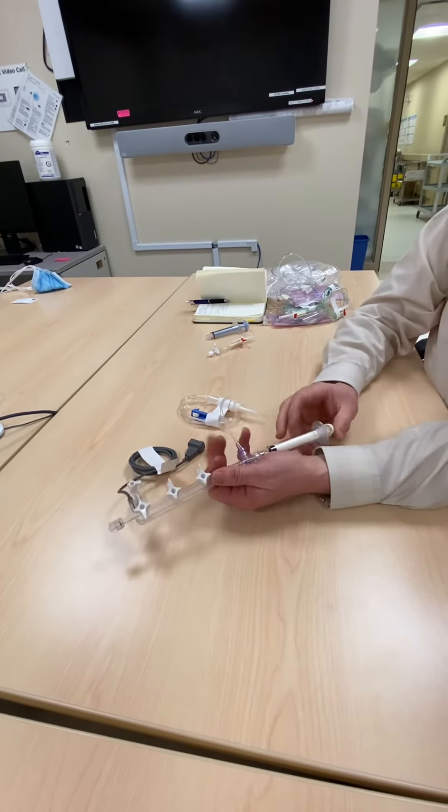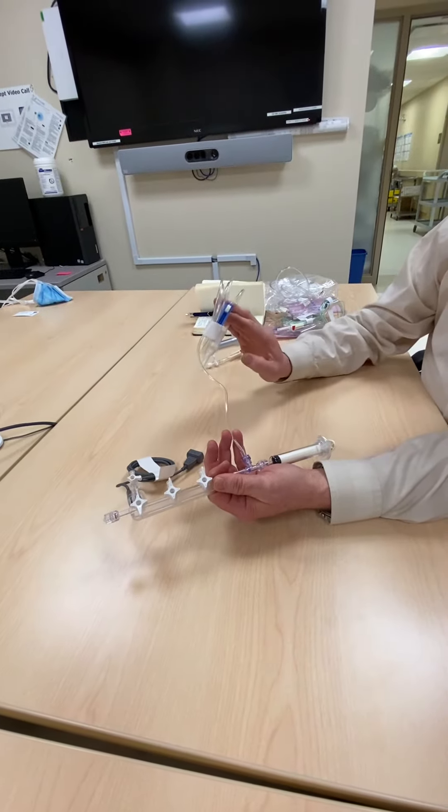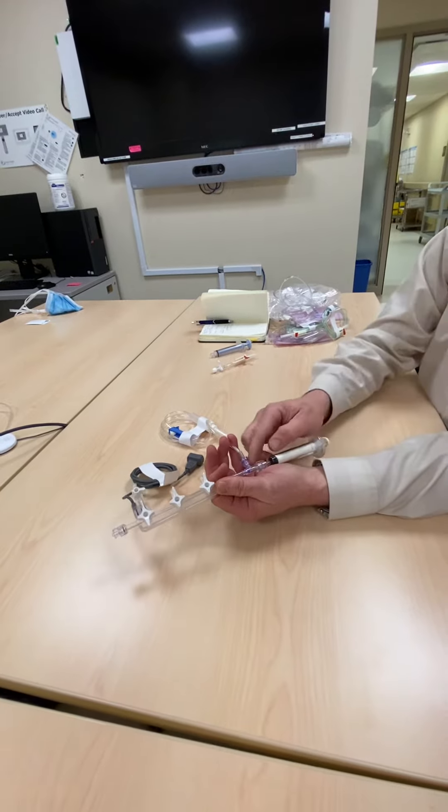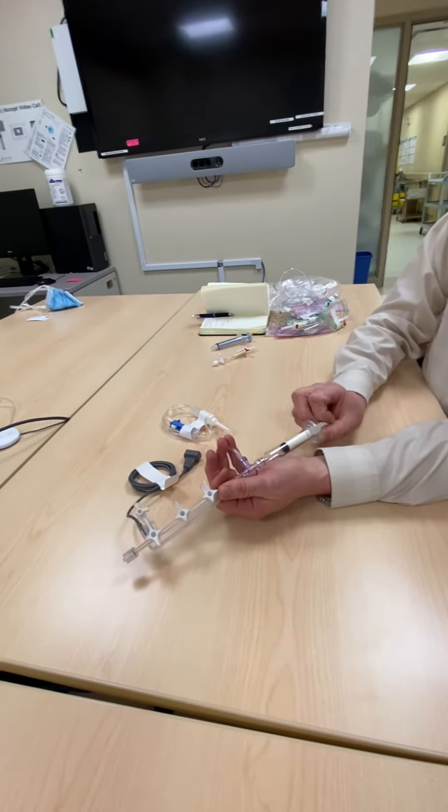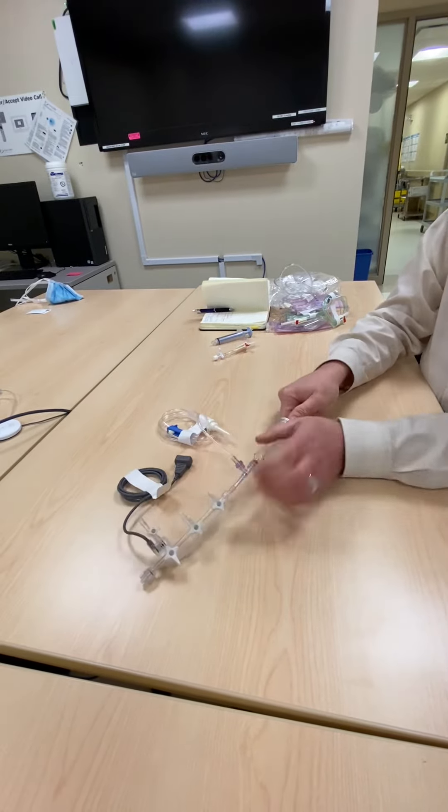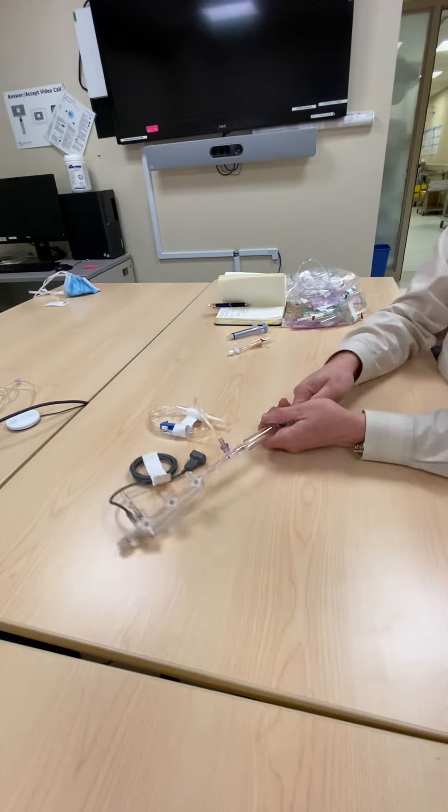On this end, what we have is a couple of one-way valves and then we have a line that's going to our contrast. And because of the one-way valves, what happens is that when I pull back on my syringe, it's automatically going to pull from my contrast. It will not allow anything to be pulled from this end.